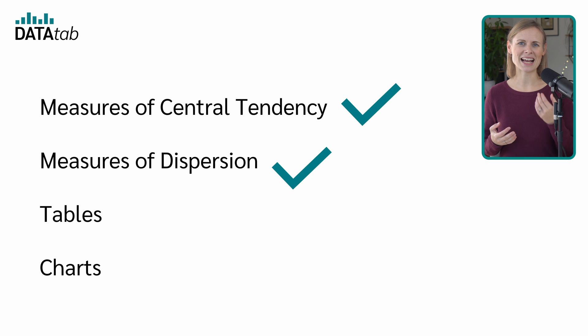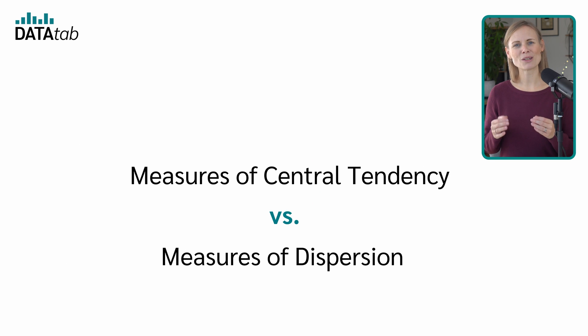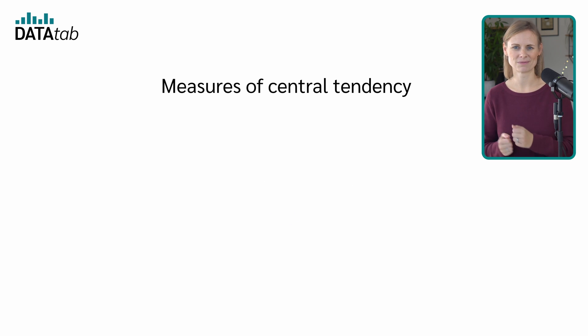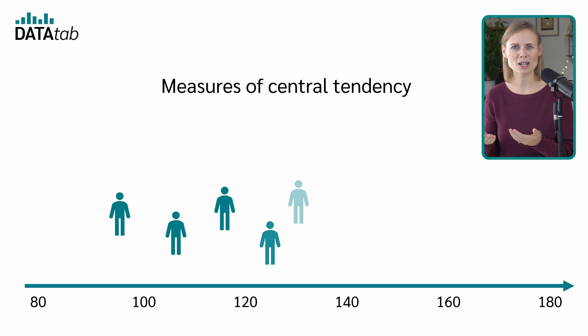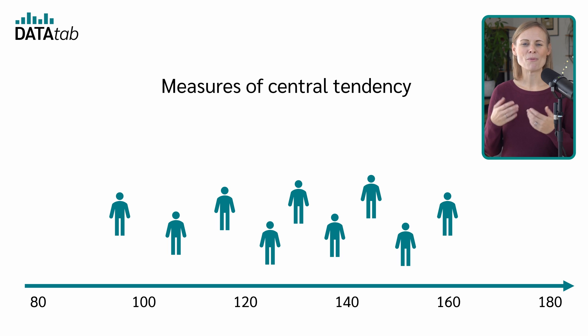Before we get to the last point, let's briefly compare measures of central tendency and measures of dispersion. Let's say we measure the blood pressure of patients. Measures of central tendency provide a single value that represents the entire dataset, helping to identify a central value around which data points tend to cluster.